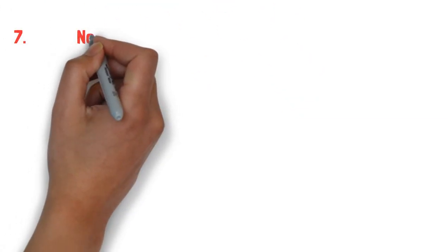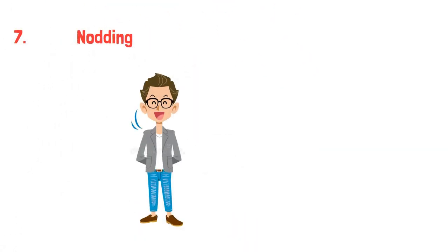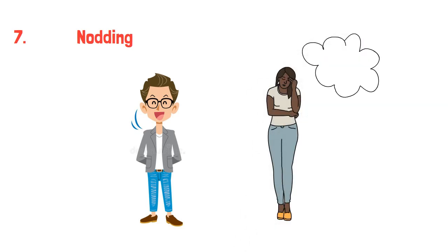7. Nodding. Exaggerated nodding signals can mean anxiety about approval. When you're telling someone something and they nod excessively, this can be a sign that they're worried about what you think of them or that you doubt their ability to follow your instructions.